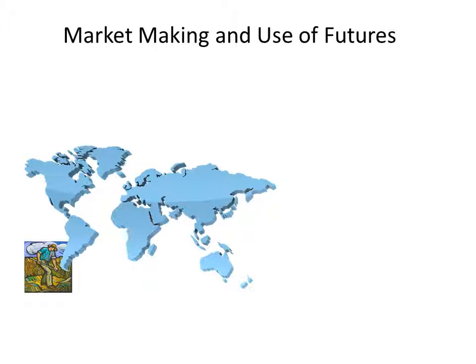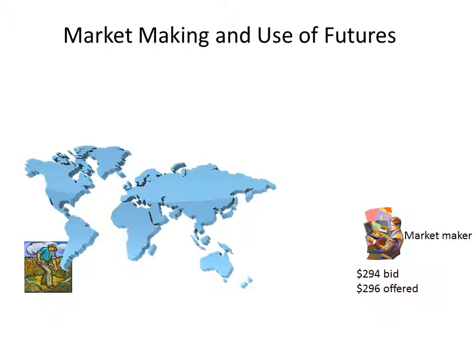Let's suppose that we have a farmer or a farmers cooperative based in South America. The farmers cooperative contacts a market maker — a dealer in commodities — and the market maker is asked to quote a price. The market maker says they would be prepared to pay 294 for the commodity and 296 to sell the commodity. The market maker doesn't necessarily know whether the cooperative is buying or selling, hence the market maker will always quote a two-way price. The spread is two dollars, and we'll assume this is the price per unit.